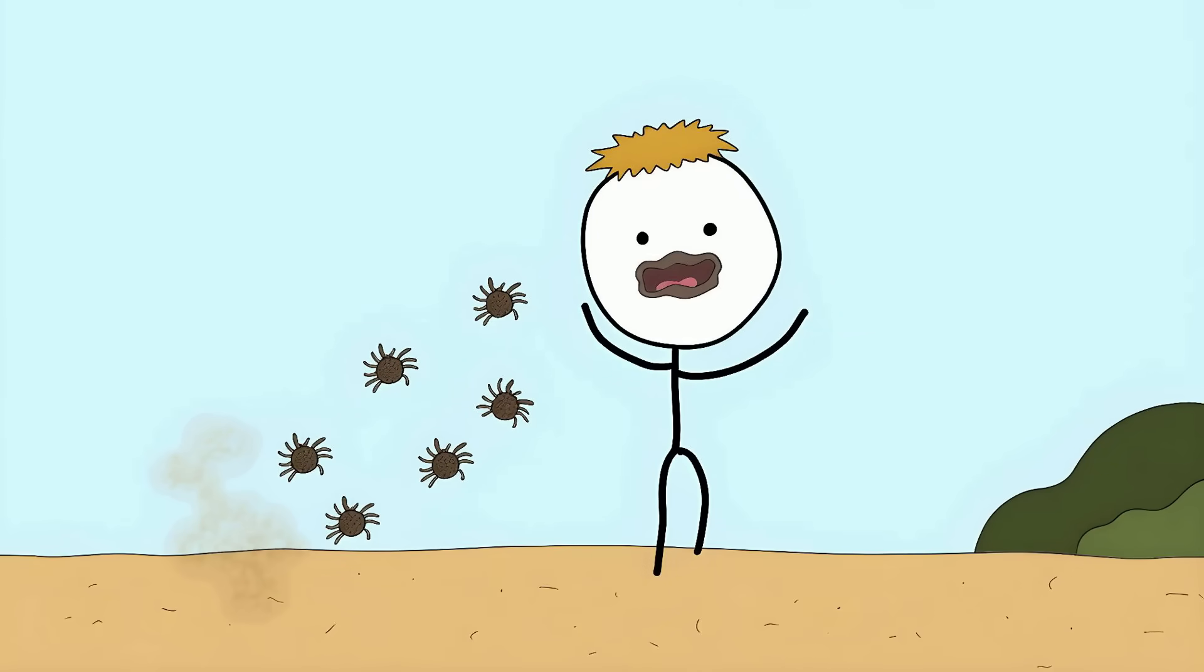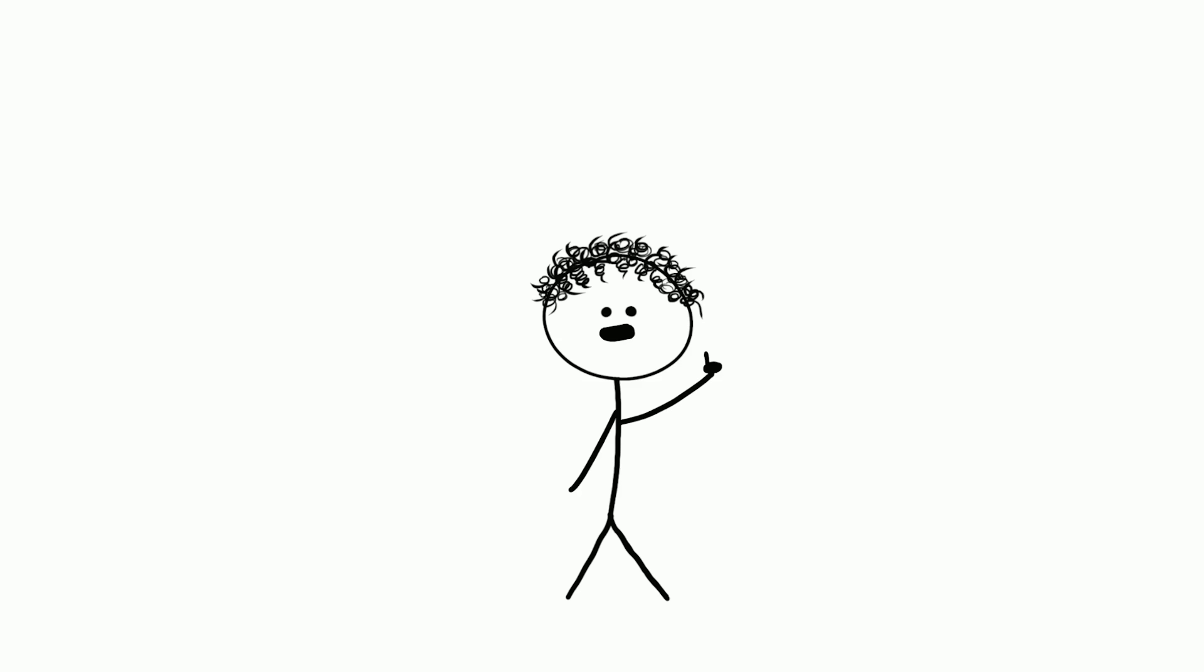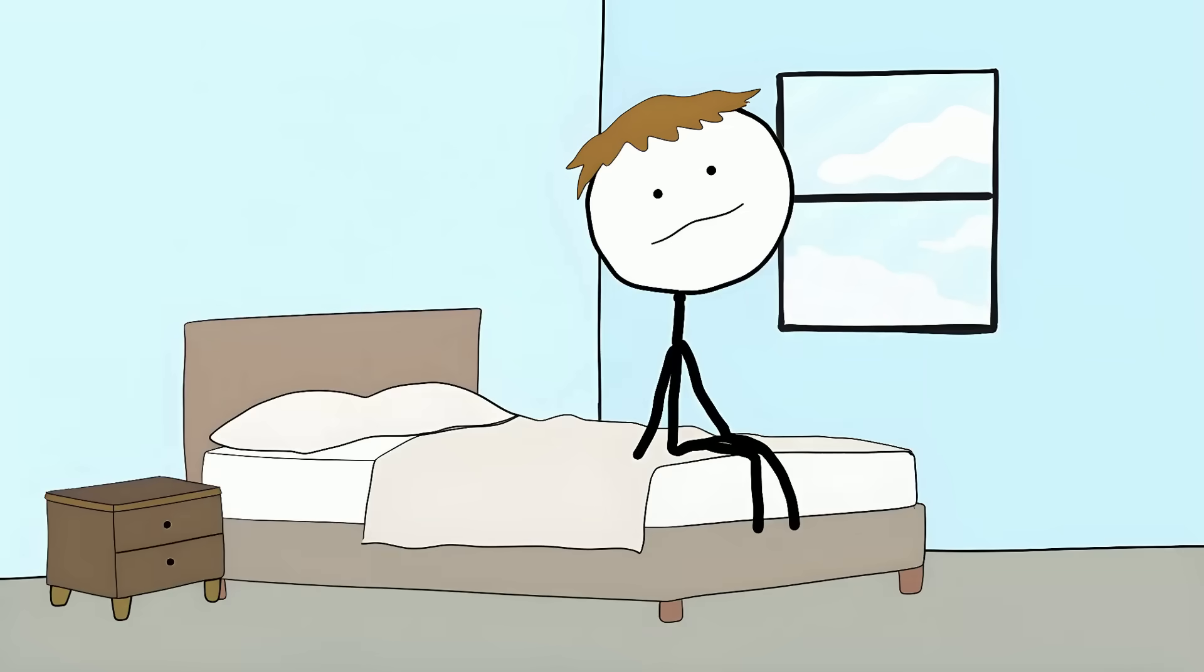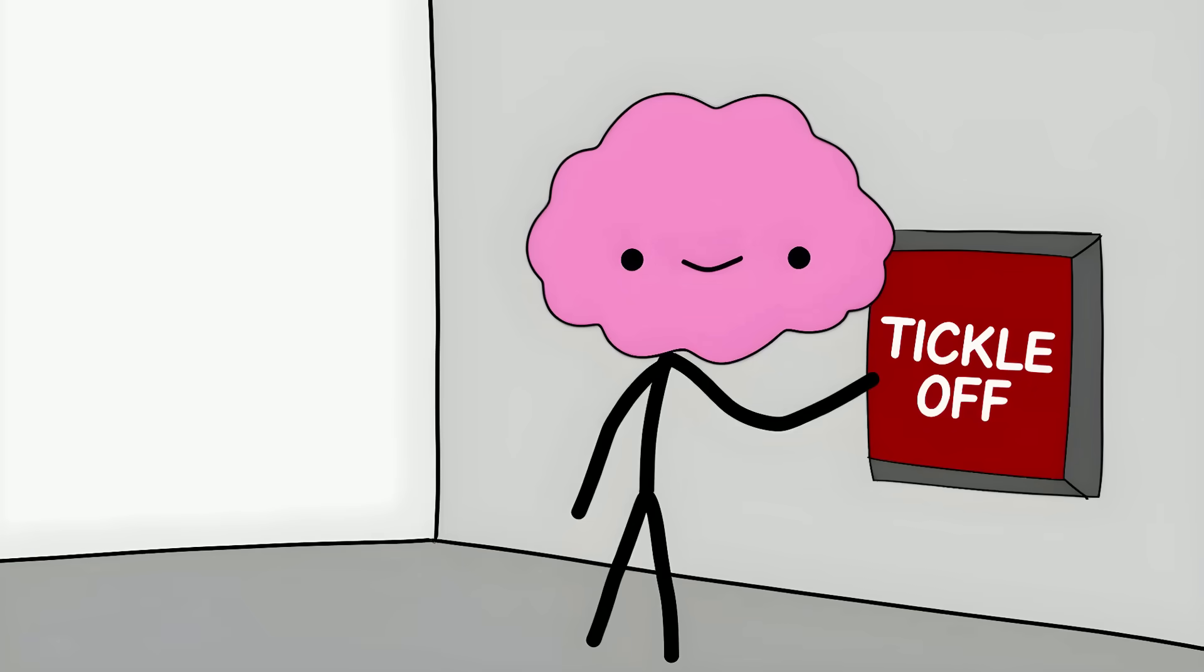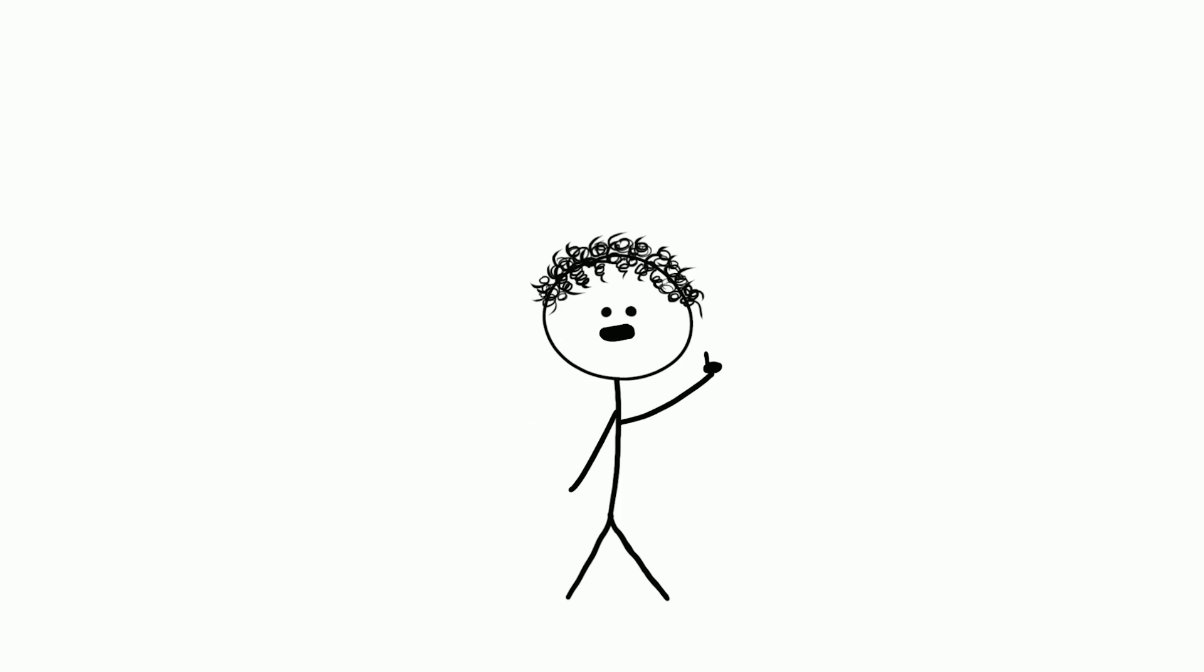Our ancestors might have evolved this response to protect themselves. An uncontrollable spasm might save your life if you're covered in prehistoric ticks, but that doesn't explain why we laugh instead of just jumping away. You can't tickle yourself. Your brain knows it's coming and shuts down the response.